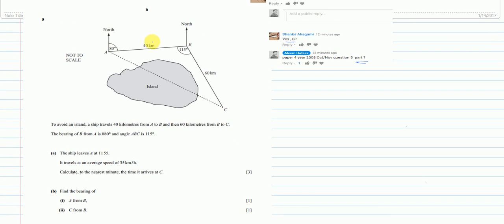To avoid an island, a ship travels 40 km from A to B, and then 60 km more from B to C. The bearing of B from A is 80 degrees, and the angle ABC is 115 degrees. The ship leaves at 11:55. It travels at an average speed of 35 km per hour. Calculate to the nearest minute, the time it arrives at C.